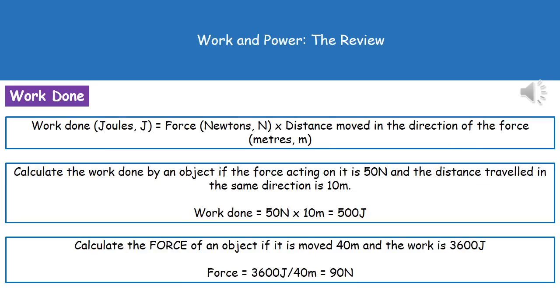To give you an idea of the kind of calculation you might have to do on your exam paper, you'd have a question along the lines of: calculate the work done by an object if the force acting on it is 50 Newtons and the distance travelled in the same direction is 10 metres. We know that work done is force times distance, so our force is 50, our distance is 10, so 50 times 10 gives us our work done, which is 500 joules.